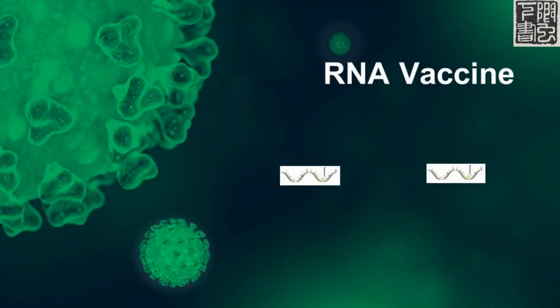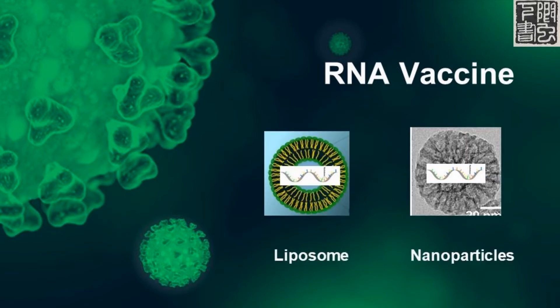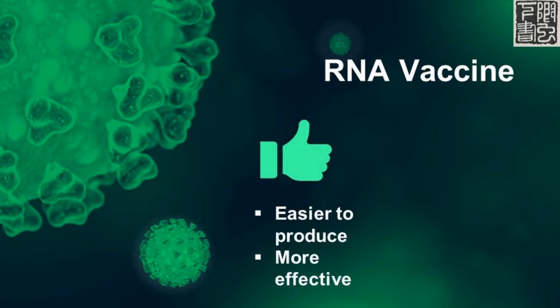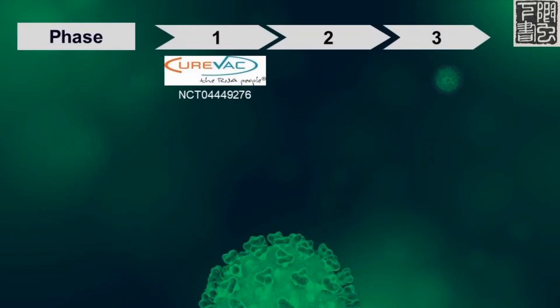RNA vaccine packages messenger RNA that makes the COVID spike protein in liposome or lipid nanoparticles. The lipid nanoparticle can improve the delivery of the vaccine to the target cells. The RNA vaccine may be more effective since it skips the DNA to RNA step and goes to viral protein production directly, but it remains unproven and has no approved vaccine in the market. CureVac, a German-based company, and the Chinese People's Liberation Army both have their vaccines in Phase 1.